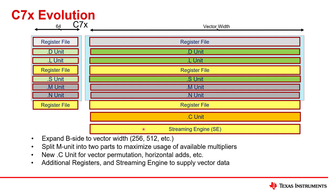The streaming engine can significantly improve the performance of the memory hierarchy by prefetching data from memory to a location near the DSP. Suppose you've got a loop where there's an operation happening with a really big 512-bit vector that you need to load from memory over and over again — the streaming engine is about making that happen as fast as possible. All of the C7000 DSPs available as of this recording have two streaming engines, and that pattern is likely to continue for quite some time.